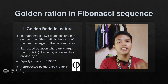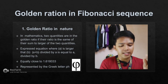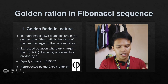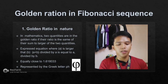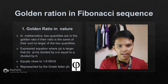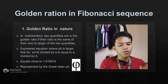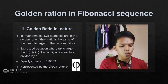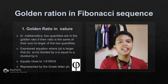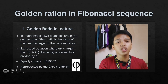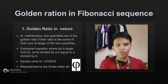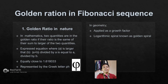For example, A plus B divided by A equals A divided by B, which is approximately equal to 1.618033. The golden ratio is also represented by the Greek letter phi. To demonstrate: 13 plus 8 equals 21; dividing 21 by 13 gives 1.6153846, which is closely approximating the golden ratio. In geometry, the golden ratio is applied as a growth factor and as a logarithmic spiral known as the golden spiral.